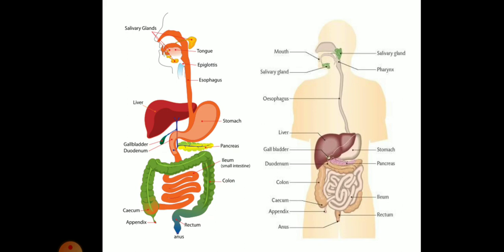This saliva-mixed food is sent from the oesophagus to the stomach. In the stomach, there are three major secretions by the gastric glands: HCl, mucus, and digestive enzymes.